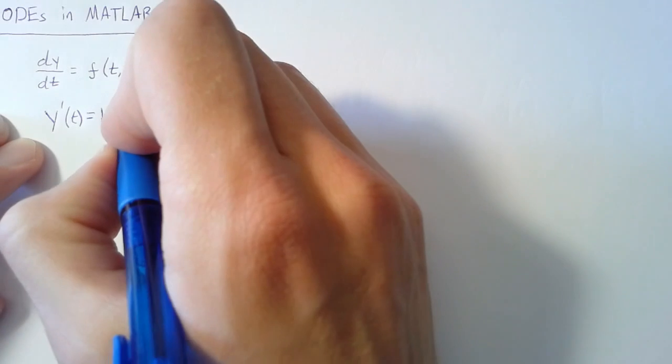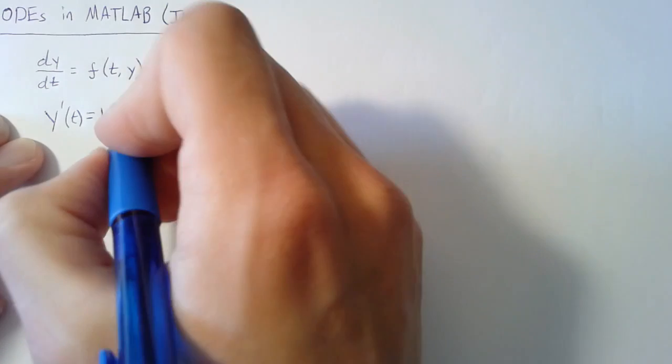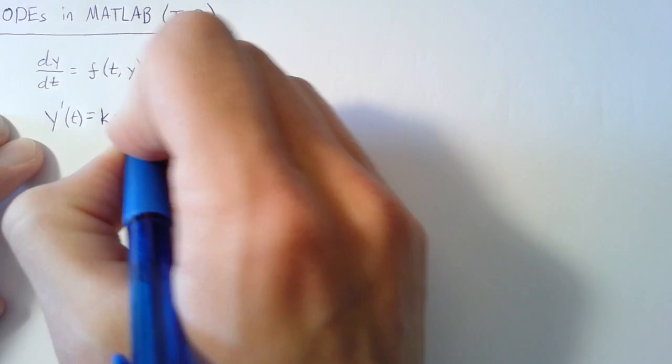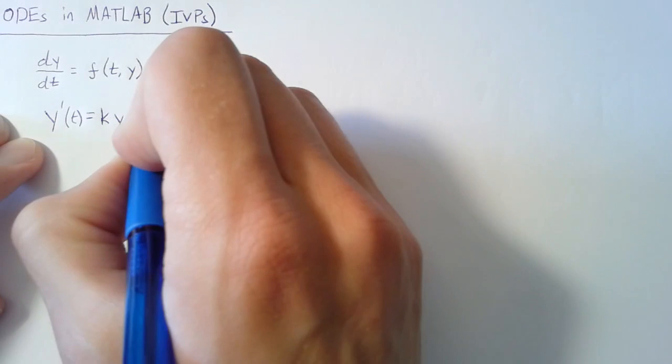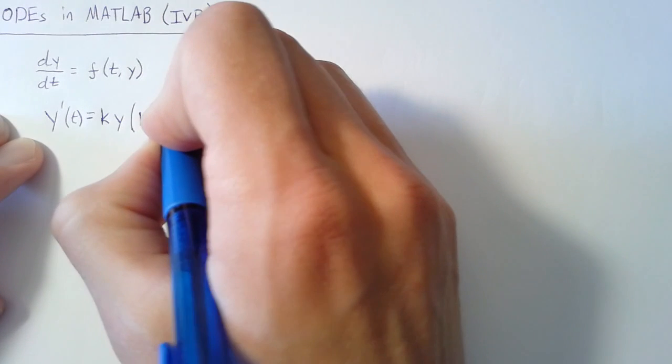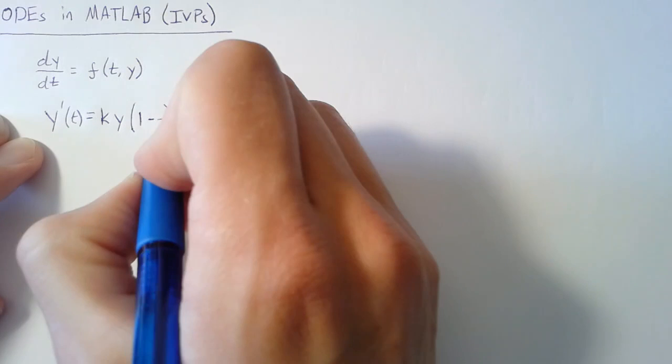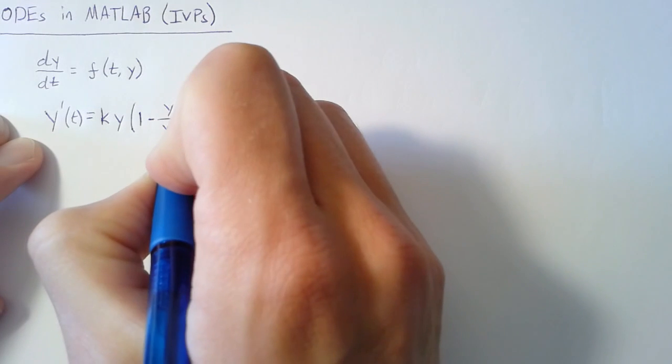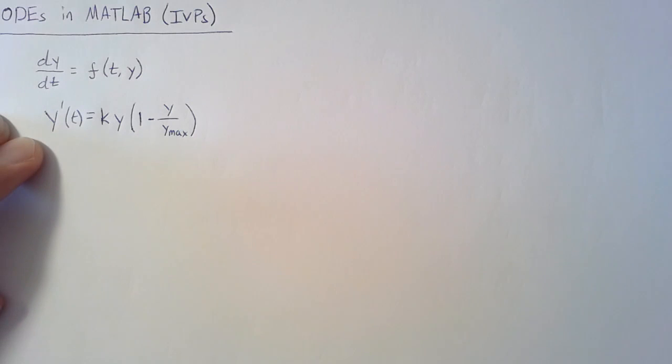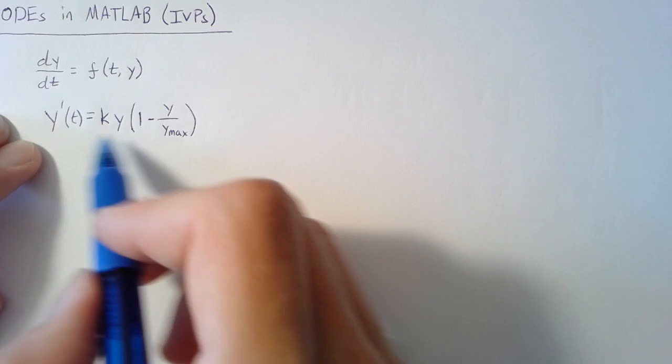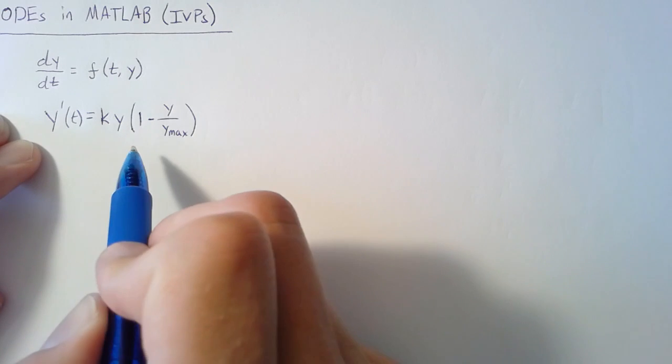To make this a little more realistic, we're going to add in a population limit through 1 minus y over y_max, where y_max is just that population bound that we're trying to set. So this is the function that we're interested in simulating.